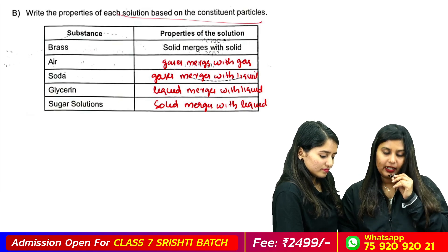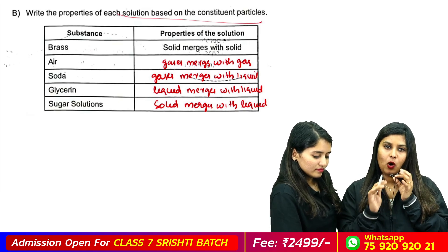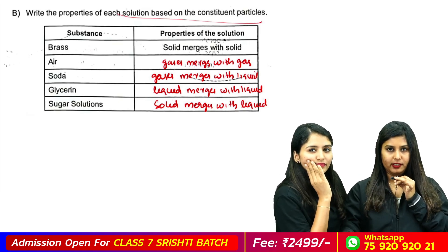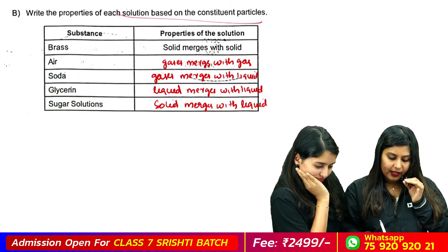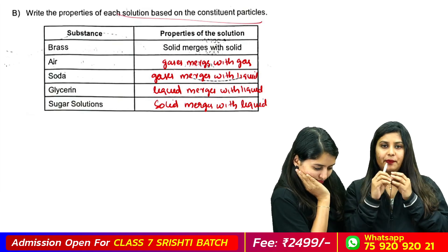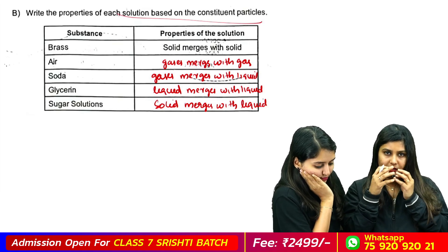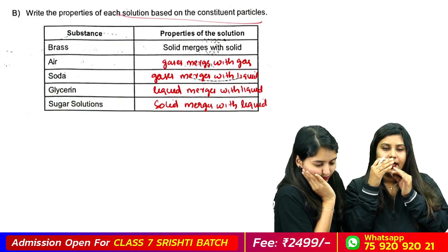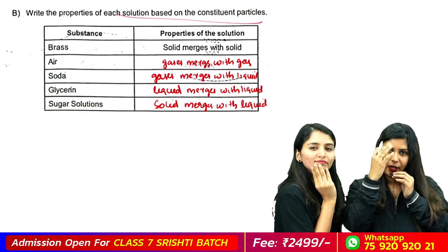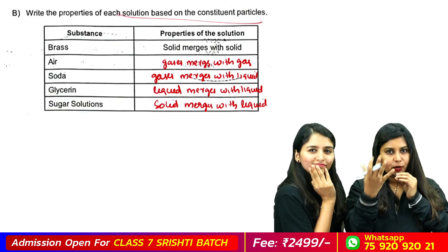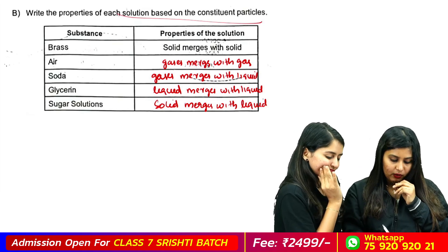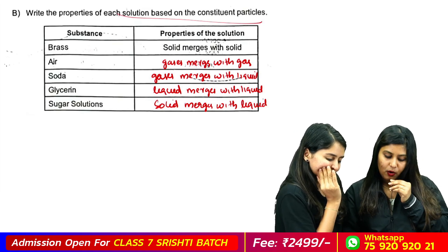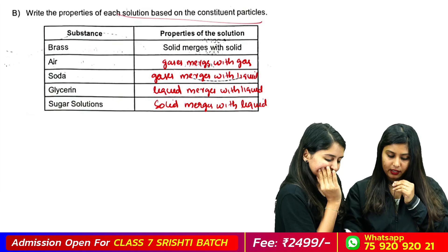If you call it brass, it will be zinc and copper — solid merges in solid. If you call it, we have a mixture — or a solution. It will sink the two sides. If you call it copper, it will sink the copper in solid.